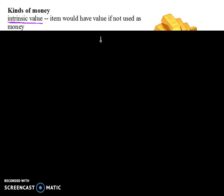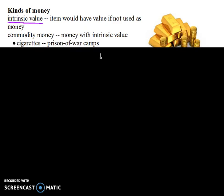So let's look at some examples of this. What we call commodity money is money with intrinsic value. Commodity money is money that has intrinsic value to it. So anything that's used as money that has intrinsic value is called commodity money.